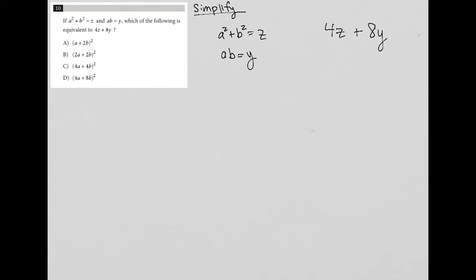So what do I know? I know that z = a² + b², and I know that y = ab. So I'm going to replace z here with a² + b².